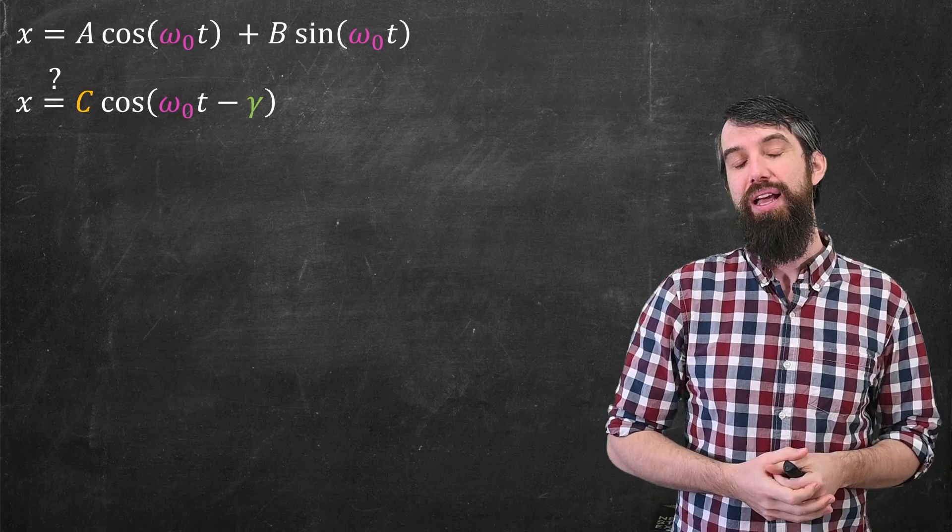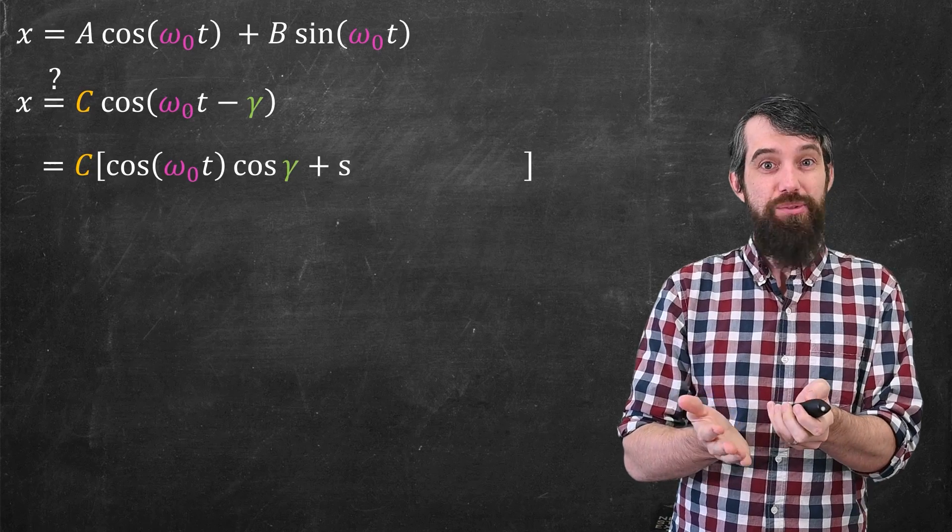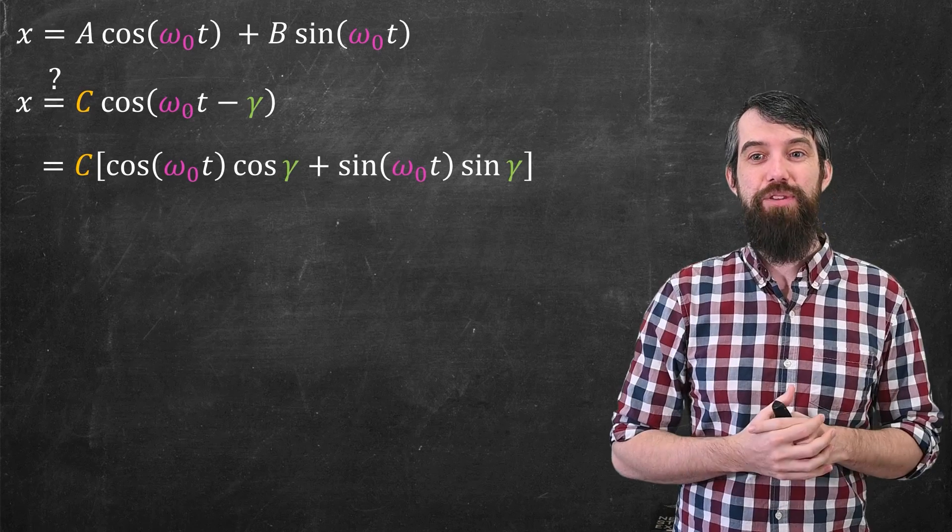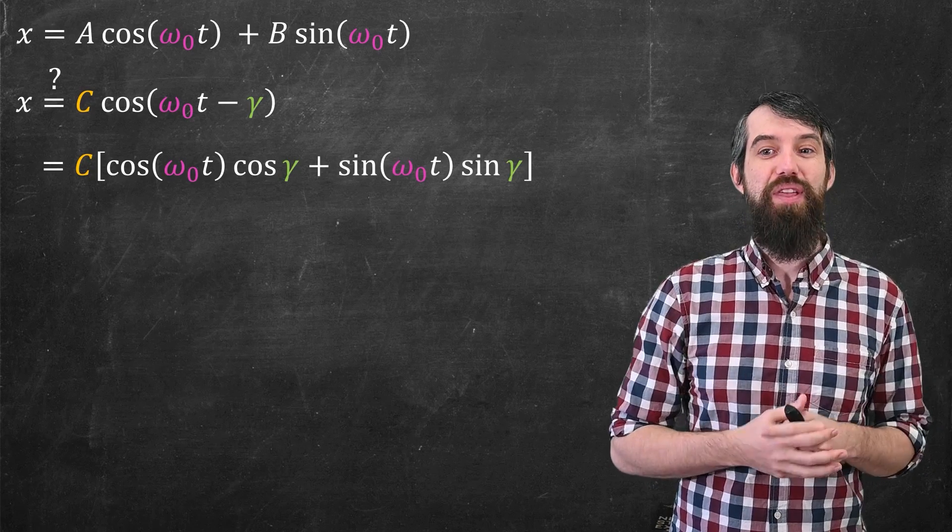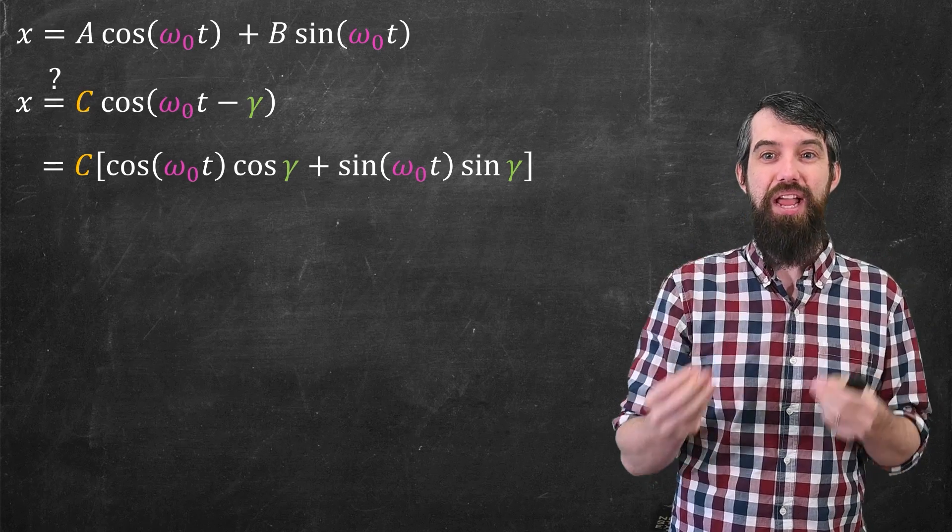So I haven't shown you how to do this. I'm going to see, can I do it? Well, we have a trigonometry to deal with cosine of one thing minus another thing. So I could expand that guess and write it as the constant C at the front, then cos(ω₀t)cos(γ), and then + sin(ω₀t)sin(γ).